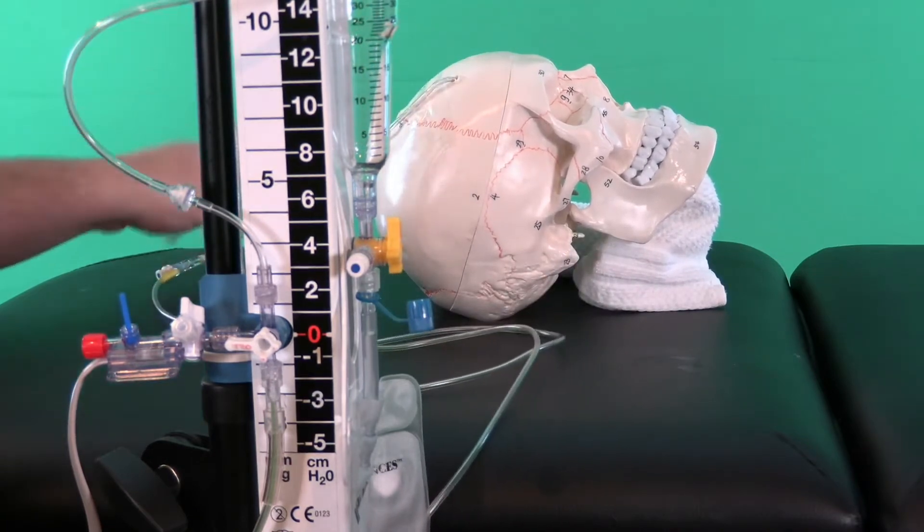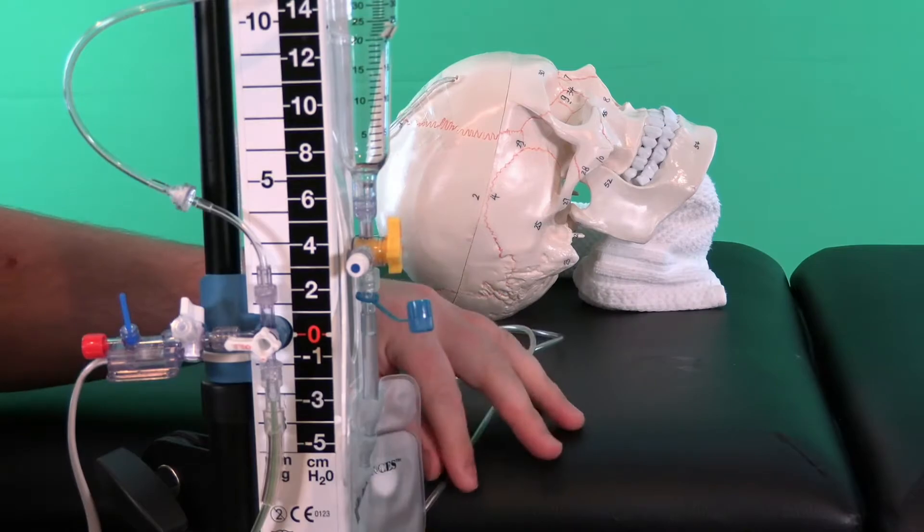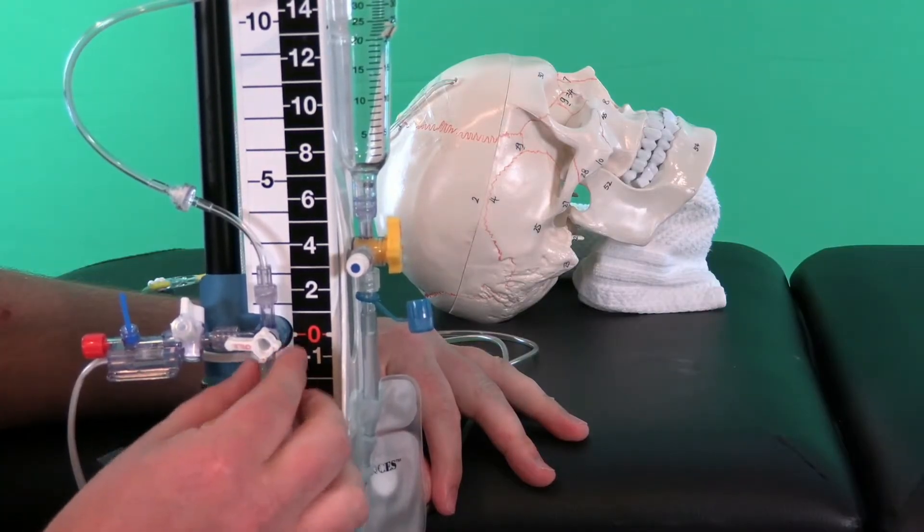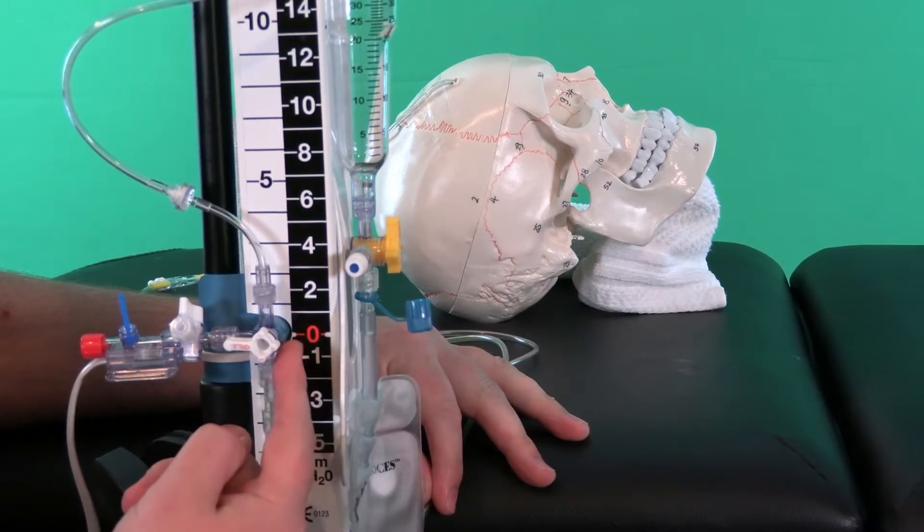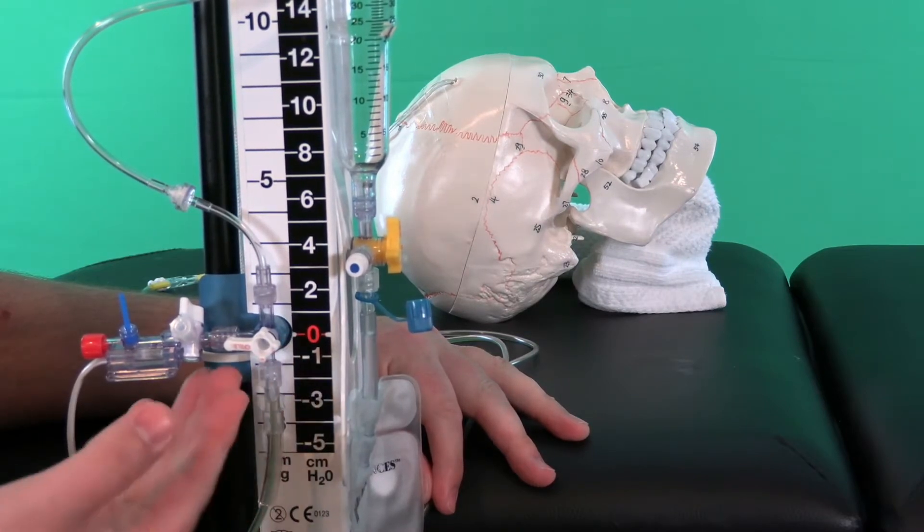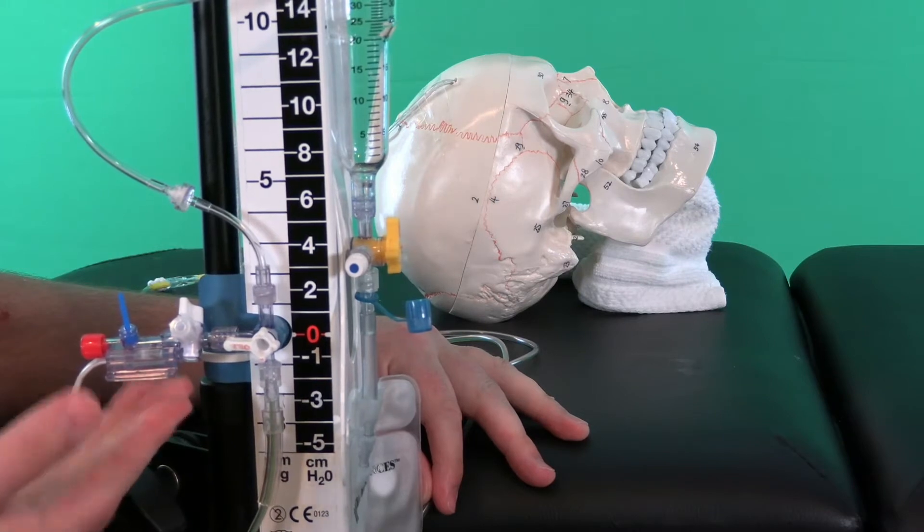That CSF is going to flow out into this tube, and the first thing it meets right here is that three-way stopcock. This right now is turned off to the transducer and open to drain.